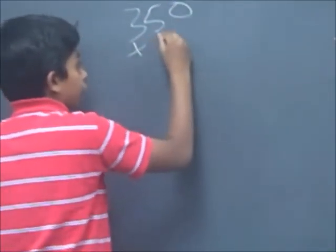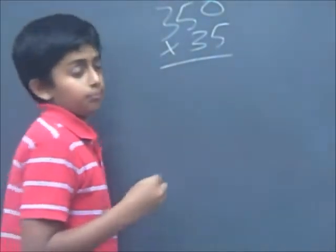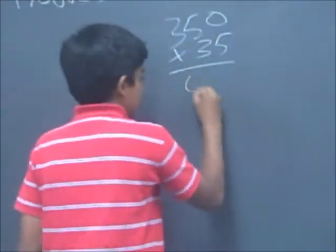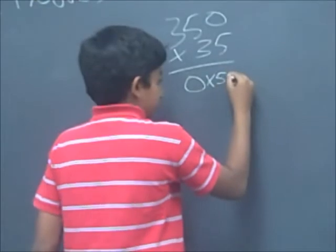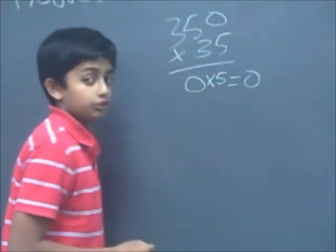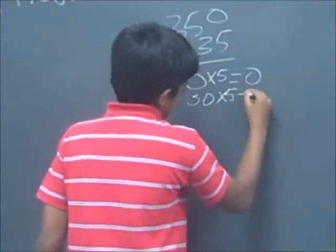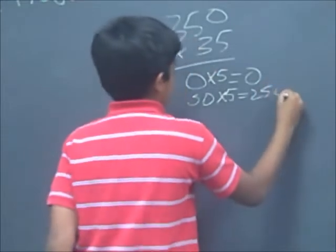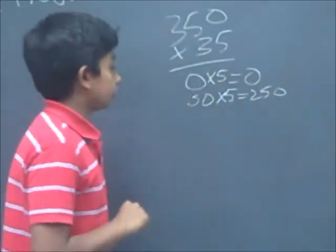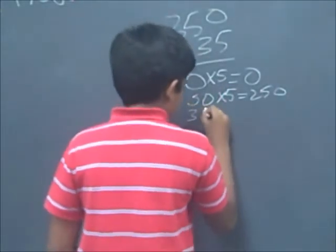150 times 35. First you have to do 0 times 5, because 5 is in the ones place, which equals 0. Then next you have to do 50 times 5, because 5 is in the tens place, which equals 250. Then next you have to do 300 times 5, because 3 is in the hundreds place, which equals 1,500.